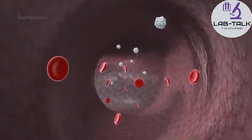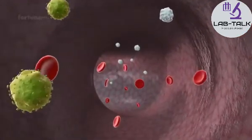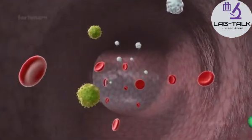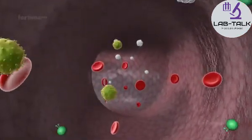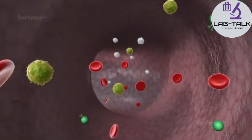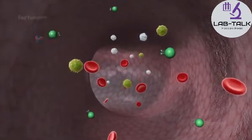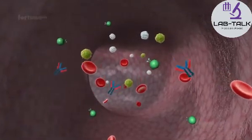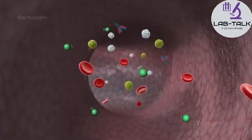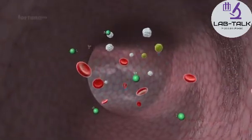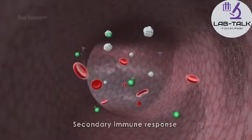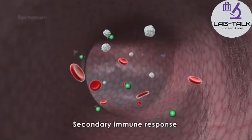If antigens invade again, memory cells will recognize them and quickly produce antibodies to combat them. This is a secondary immune response.